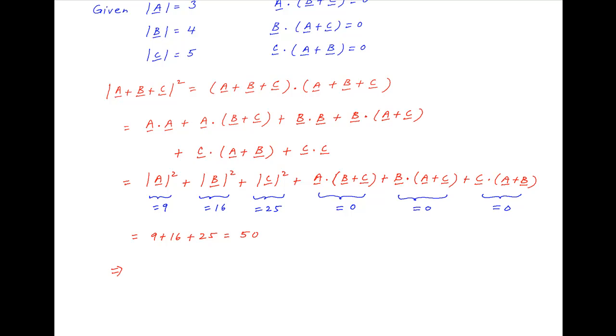Taking the square root, the length of vector a plus b plus c is equal to the square root of 50.